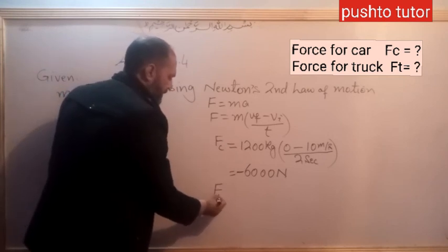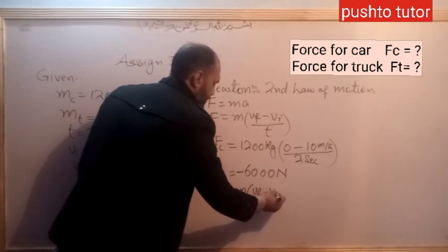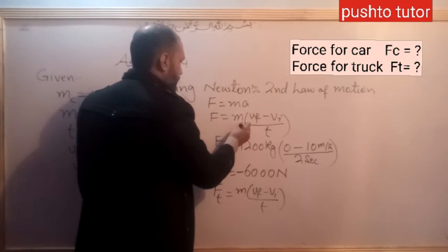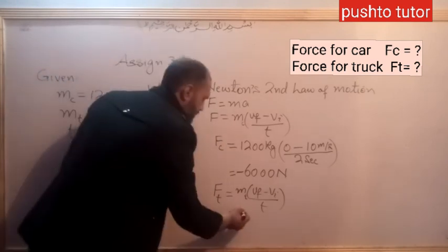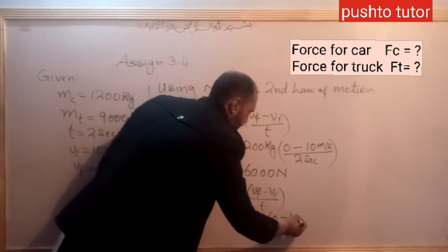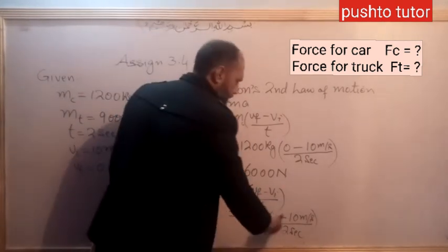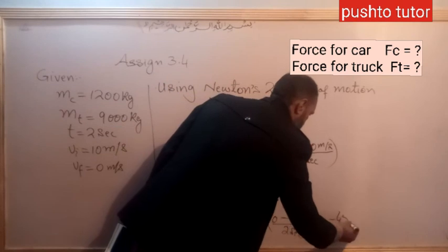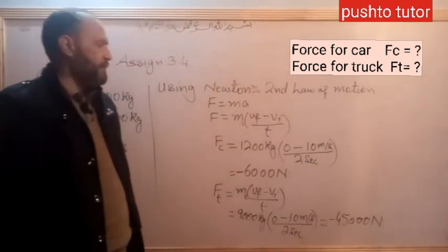For the truck, the force is F equals M multiplied by Vf minus Vi divided by T. The mass of the truck is 9000 kg, and Vf minus Vi is 0 minus 10 divided by 2 seconds, giving negative 5. So 9000 multiplied by negative 5 equals negative 45000 Newtons.